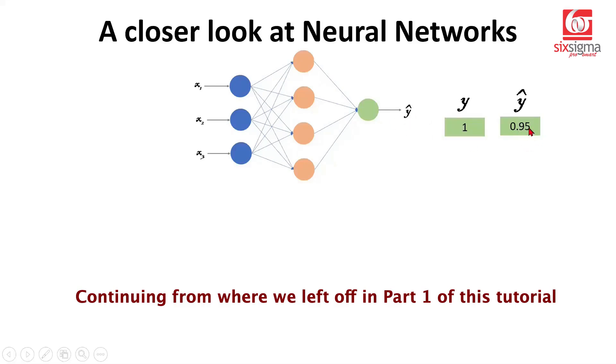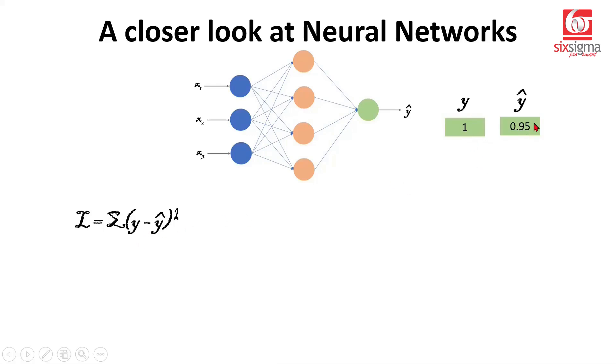We've generated a prediction of 0.95, which is very close to one, but we still need to see if we can improve this further. Now comes the concept of loss - the difference between actual and predicted values. Generally for classification we use binary cross entropy, but we'll use the simplest loss function: squared error loss. This is the sum of difference between actual and predicted values. Remember, the objective is to find such weights and biases which help us minimize the loss.